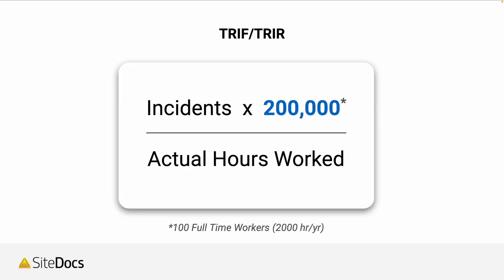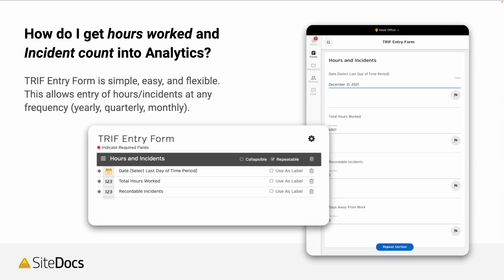To calculate TRIR, you're going to need the number of incidents and the number of hours worked. To collect that information, you can simply build a TRIR entry form. This allows you to enter the data into SiteDocs to make it available on your dashboards. You'll make a simple form that includes the date of the time period, the total hours worked, and the recordable incidents.